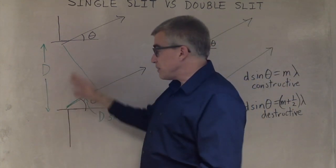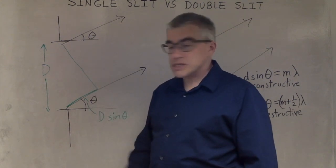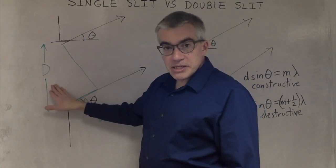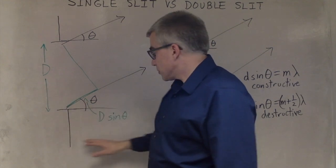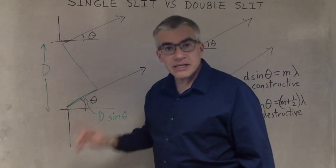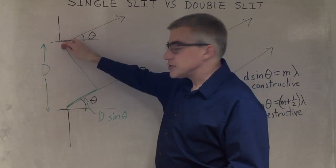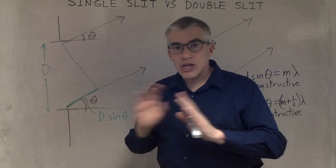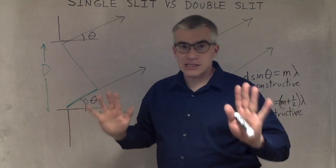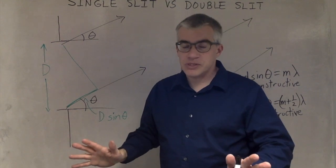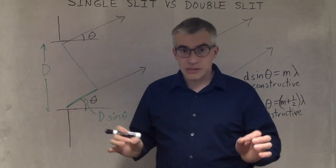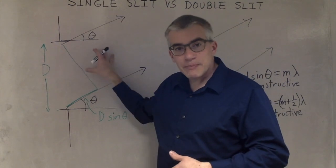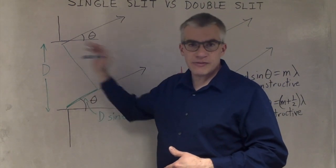For the single slit, if we imagine it as a double slit where we knocked out the middle wall, the gap is big D. Big D sin theta is the path difference between the two edges. Now there's not just two beams anymore — there are lots and lots of beams. I made a video using Desmos to describe what happens when we add up all of these waves together.